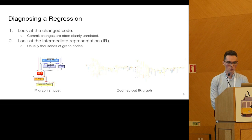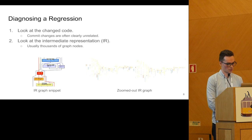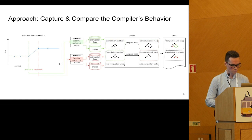Another option is we can look at the IR. We have an example of the IR on the slide. However, it usually contains thousands of IR nodes per compilation unit, so just by looking at the graphs and diffing the graphs, we cannot find the issue.